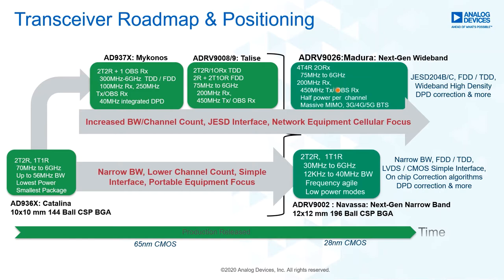Additional features include DPD, multi-channel and multi-device synchronization enabling massive MIMO systems. More recently, the ADRV9002 — also known as Navassa — was released as a next-generation highly integrated narrowband and wideband device. It uses LVDS/CMOS interface and supports channel bandwidths from as low as 12 kHz all the way up to 40 MHz, making it very frequency-agile and allowing trade-offs between RF performance and DC power.